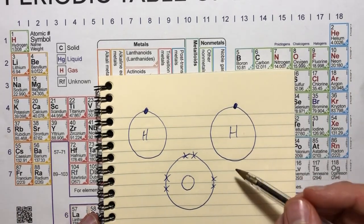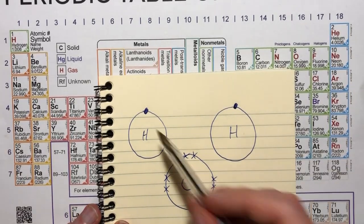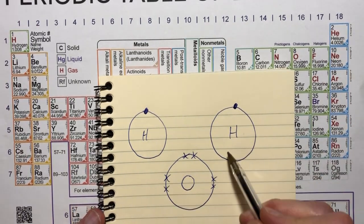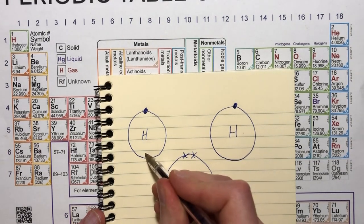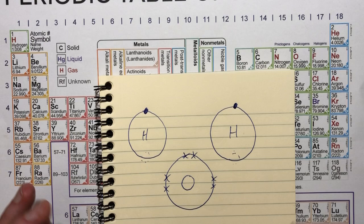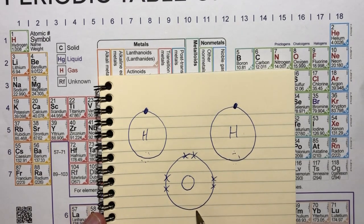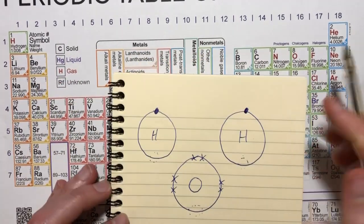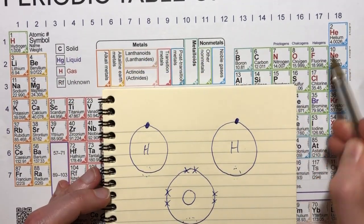And now, again, the same rule is they want to get a full outer shell. Remember, the first shell can only hold two electrons. So these two hydrogens will be happy if they can just add a single electron here or here to their shells and then they'll be full. Oxygen needs another two. It needs another two to fill its shell because its shell is the second shell, so it needs another two electrons to fill it.